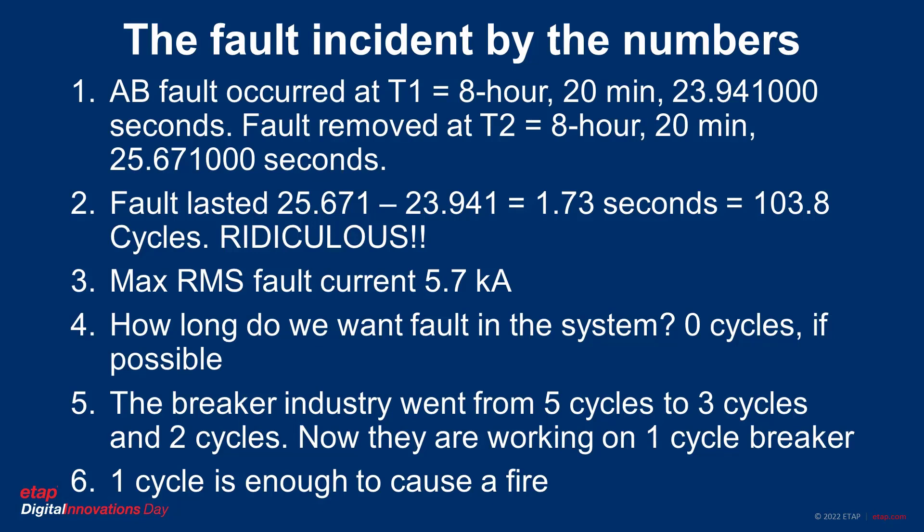Let's summarize the fault event by the numbers. The fault lasted 103.8 cycles, which is 1.73 seconds — ridiculous. The max fault current was 5.7 kA. The IEEE buff book recommends no longer than 3 cycles for instantaneous, which will give an instantaneous trip for a fault at the primary zone of a relay. For reference, the industry went from a 5-cycle breaker standard speed to 3.